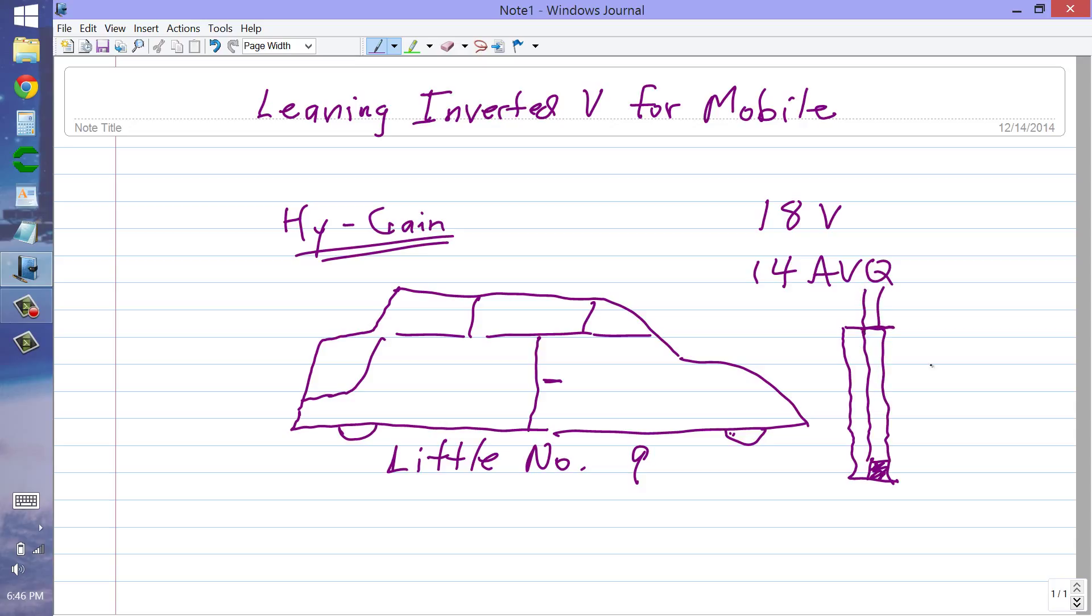You screw the base into whatever mounting surface you want it to go into. You can U-bolt it around a mast. That's what is usually done. But in this case, I think I would probably have to use heavy-duty self-tapping screws and put it in right about here, right about in the middle of little number nine from back to front. And here is the little aluminum tubing thing sticking up.